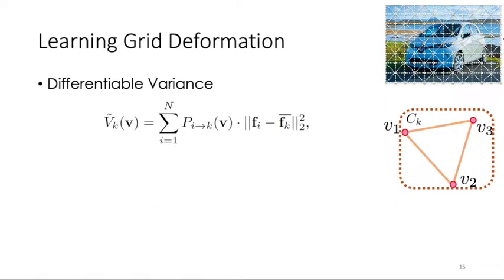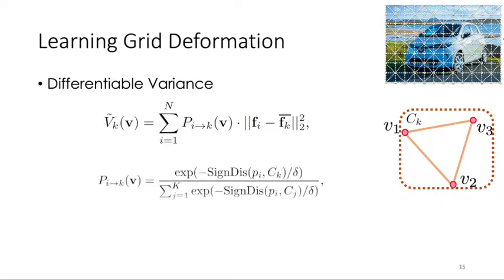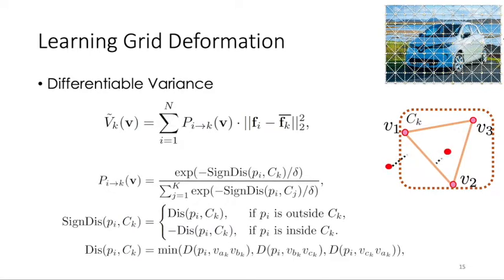The differentiable function we choose to use is the sign distance from the pixel's position to the grid, combined with softmax. The intuition behind is that if the pixel is inside of one grid or close to one grid, then the probability will be close to one, such as p1 to k here.